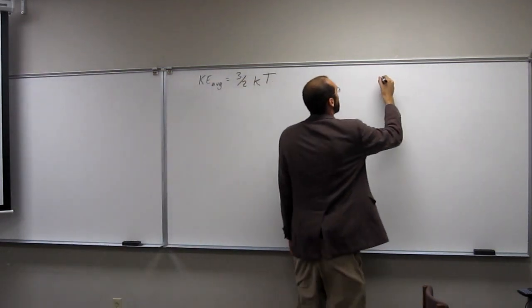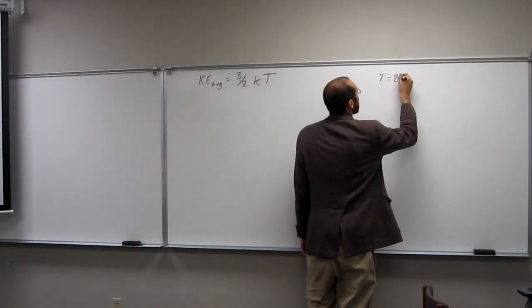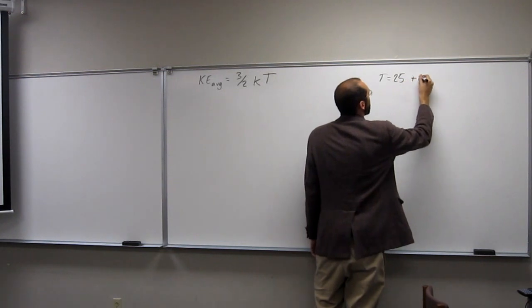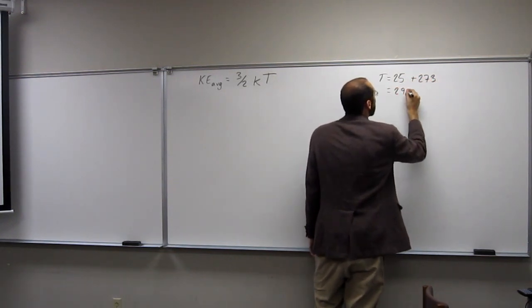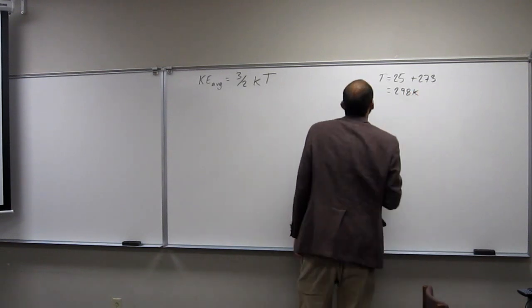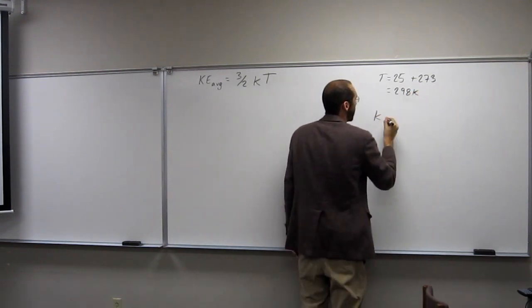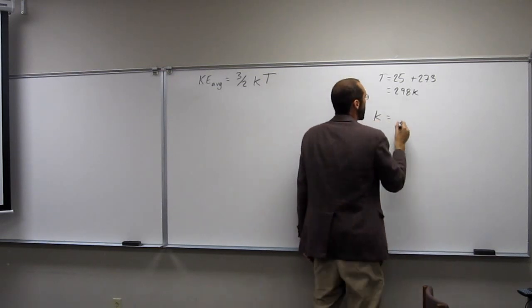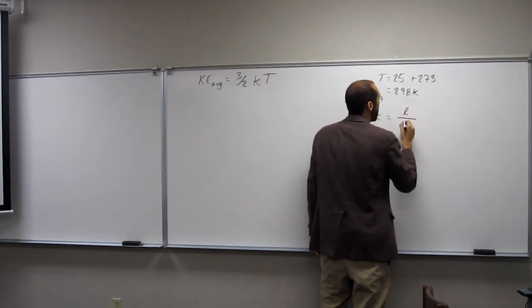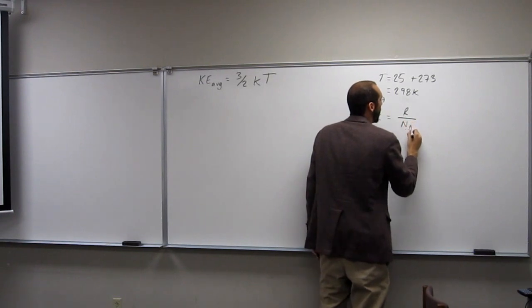So T, like we said, is 25 degrees Celsius. We've got to put it in Kelvin, so 273 to 298 Kelvin. And k is equal to r over nA.